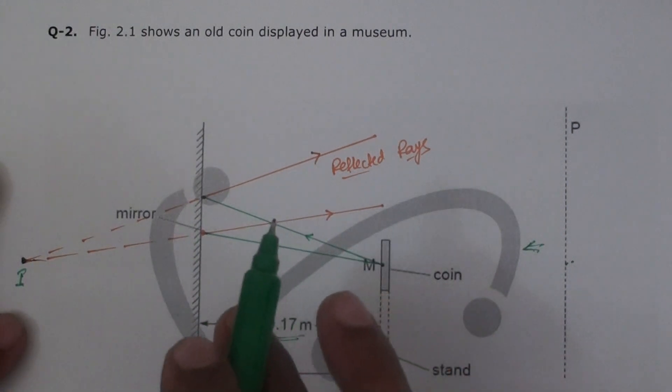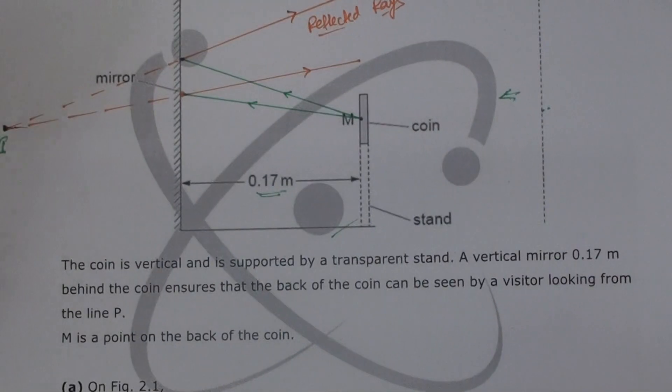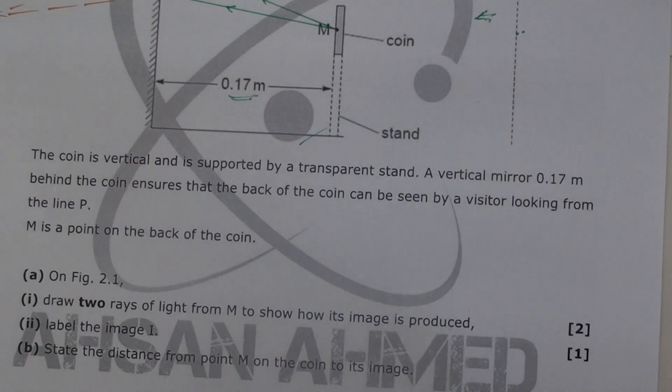They're not asking from mirror to the image, they're asking from M to the image. So be careful what they are asking. Okay, so there you go, that's the answer. Hope that was clear.